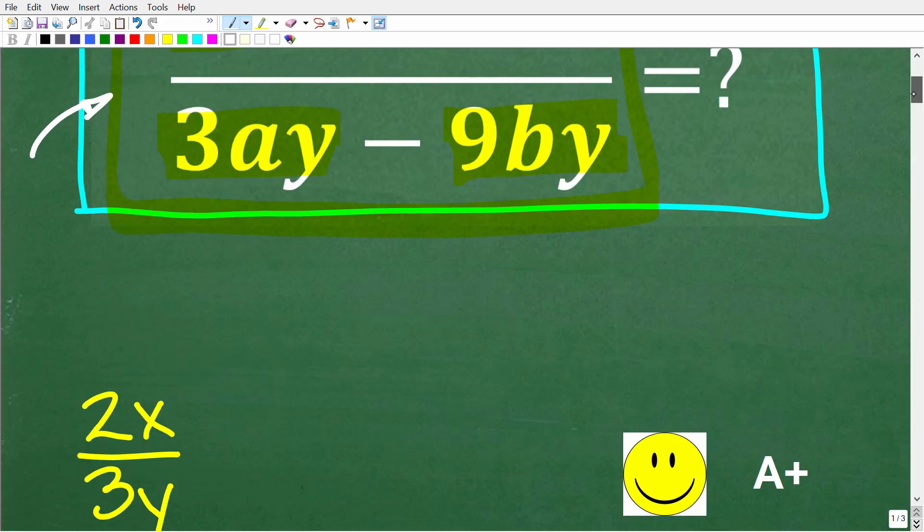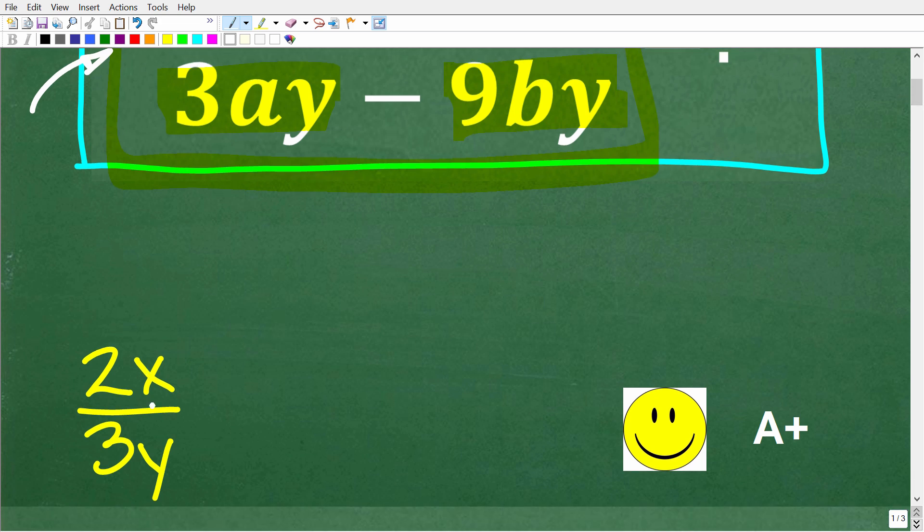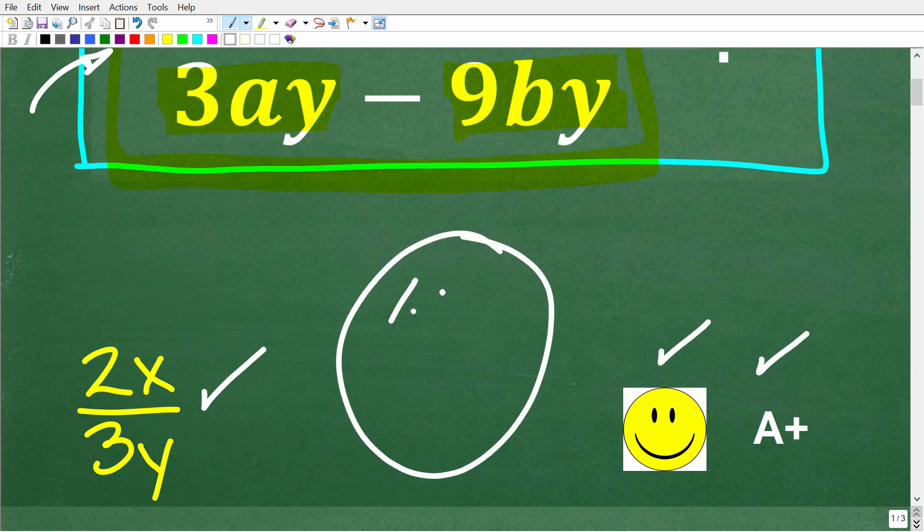The correct answer here is 2x over 3y. Now, if you got this right, you definitely get a happy face and an A+. You're like, Mr. YouTube, man, I didn't get this right. I'm missing this critical algebra skill. What is it?